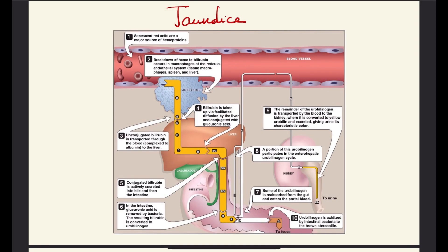Hello everyone, my name is Tiba. I'm a fourth year medical student and today I'll be explaining jaundice. When we talk about jaundice, we first need to understand the pathway in which bilirubin is excreted in order to better understand how jaundice happens, because jaundice occurs due to elevated levels of bilirubin in the blood.